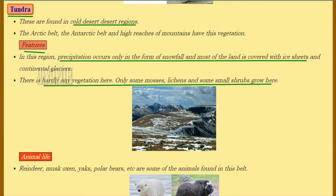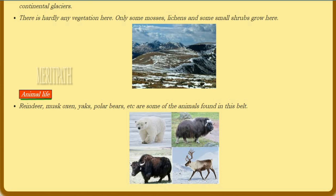Tundra vegetation is found in cold desert regions — the Arctic belt, Antarctic belt, and high mountain reaches. Precipitation occurs only as snowfall and most of the land is covered with ice sheets and continental glaciers, leaving hardly any vegetation. Only mosses, lichens, and small shrubs grow here. Animals found in the tundra include reindeer, musk oxen, yaks, and polar bears.